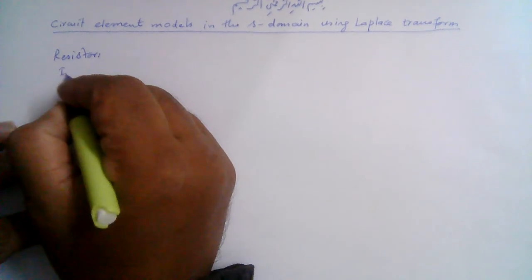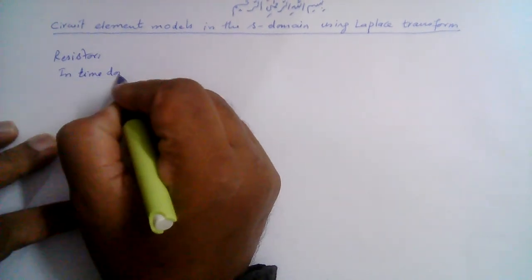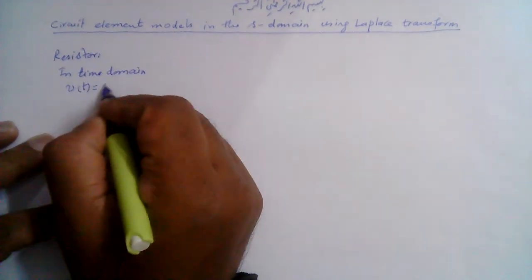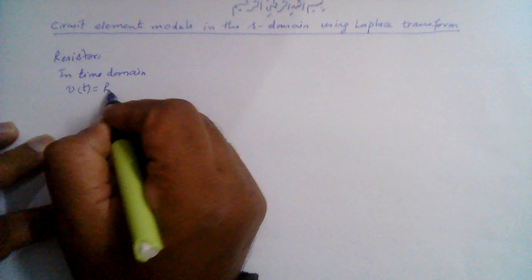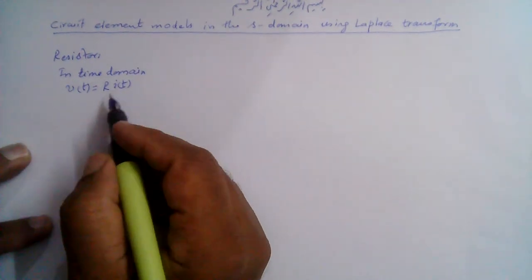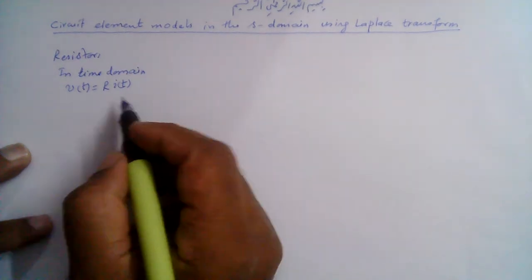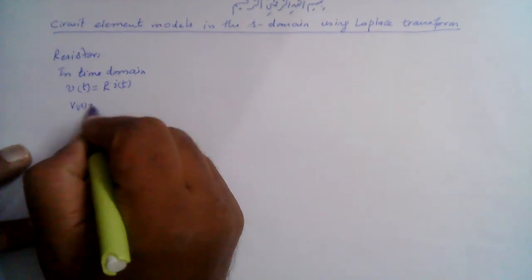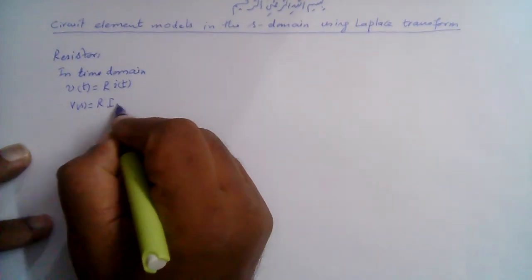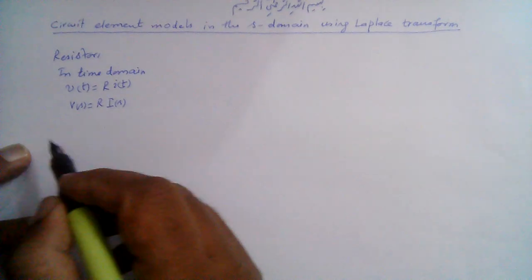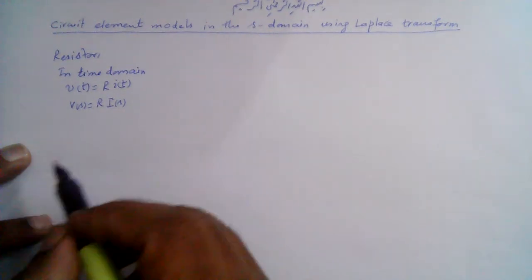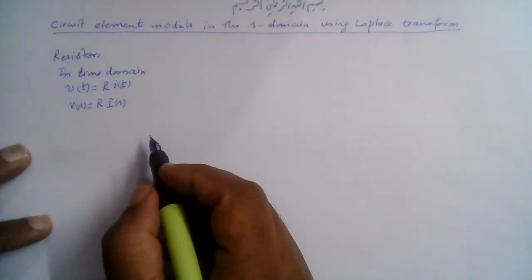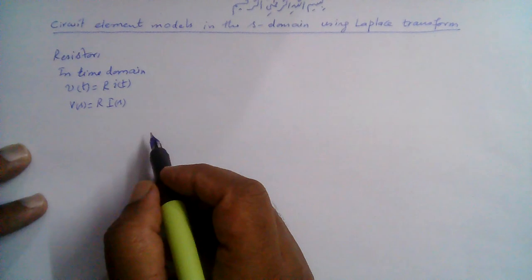For the resistor, we know that in the time domain V(t) is equal to R multiplied by I(t). If we take the Laplace transform of both sides, then using the linearity property, this will be V(s) is equal to R multiplied by I(s). So the relationship remains the same; only the voltage and current are transformed into the frequency domain.